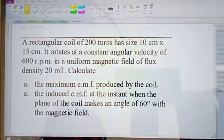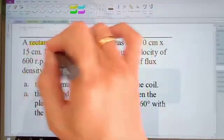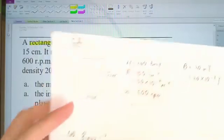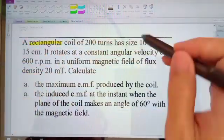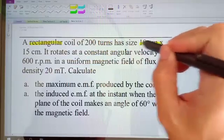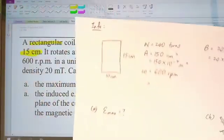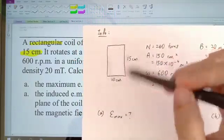Okay, so here we have a rectangular coil of 200 turns. Rectangular coil, so something like this. With size 10 cm times 15 cm. So this rectangular coil is a rectangular shape, 10 cm times 15 cm. Yeah, rectangular.